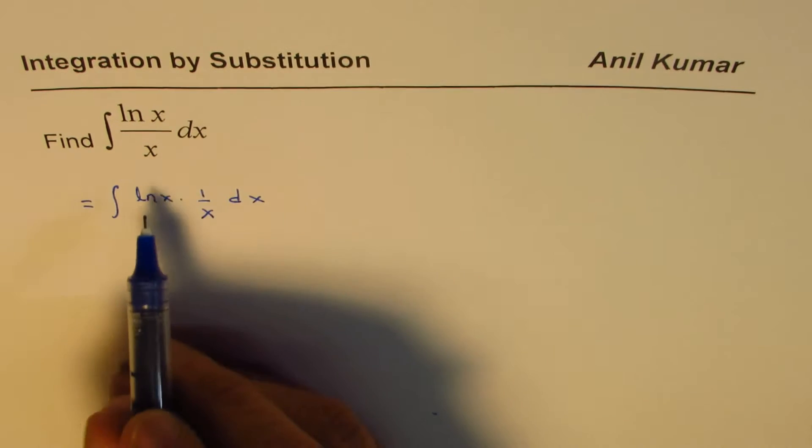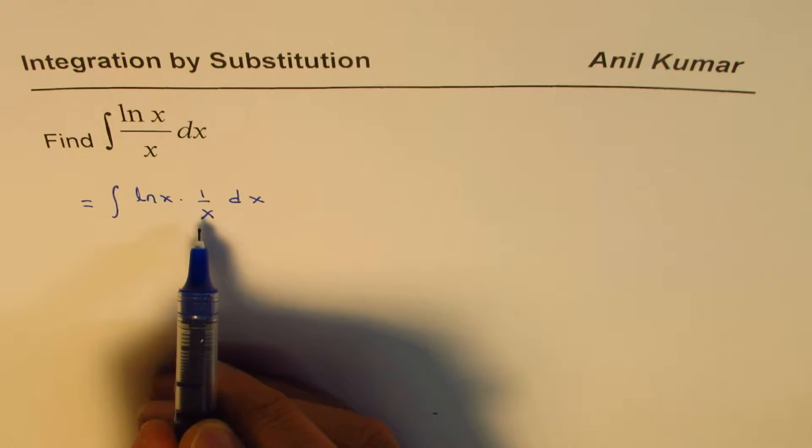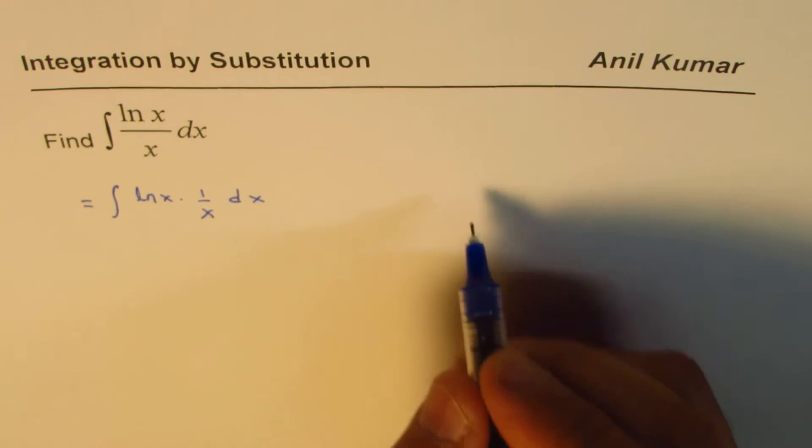You know, the derivative of ln x is 1 over x. And whenever you have this kind of situation where one function is the derivative of the other, you could always substitute.